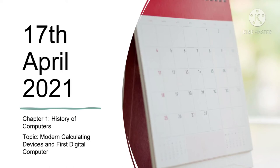Good morning class, I hope you all are doing well. In our previous class we studied about electromechanical counting devices and electronic counting devices. Now in this class we will study about some modern calculating devices which includes ABC, Z3, Harvard Mark I, ENIAC, and UNIVAC. So let's begin.